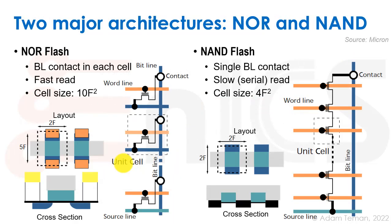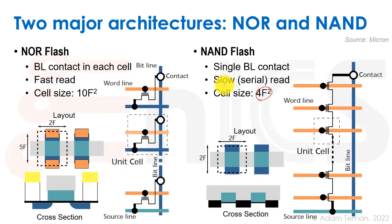Reviewing NOR vs. NAND flash: in NOR flash the bit line is contacted in each cell, giving larger cell size but fast reads since there is only one pull-down transistor. In NAND flash there is a single bit line contact per column, giving very small cell size (approaching 4F²) but slower reads due to the series resistance of many transistors. NOR flash also has slower writes than NAND flash.